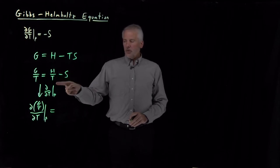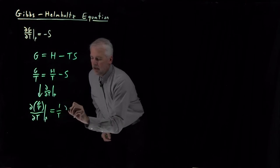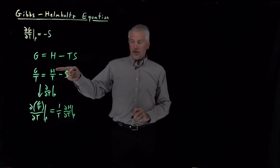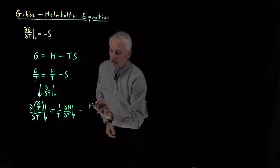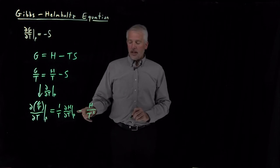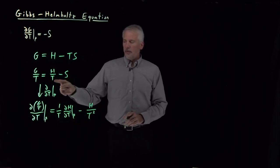The derivative of this ratio, H over T, I can use the product rule. The temperature derivative is first taking the derivative of the numerator: 1 over T times the derivative of H. And then product rule says also take H, and then the derivative of 1 over T is negative 1 over T squared. So these two terms together are the temperature derivative of H over T.